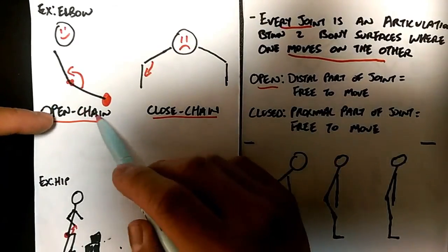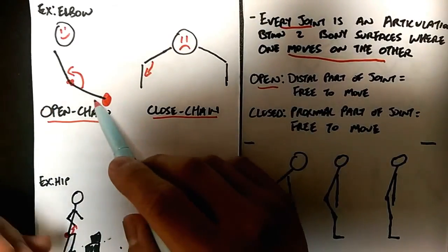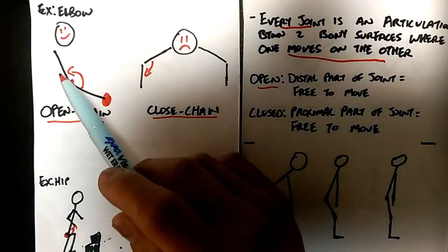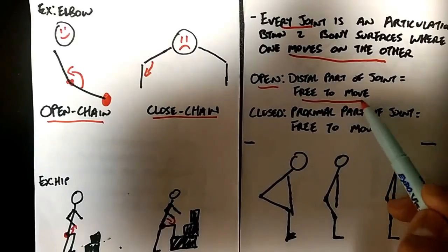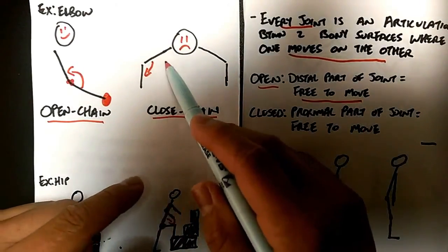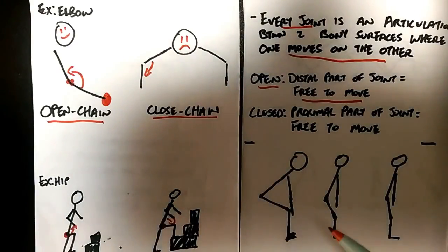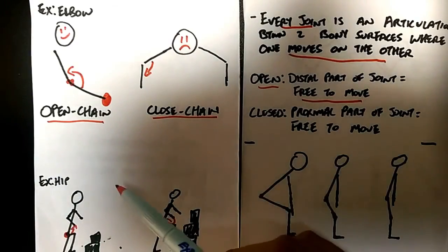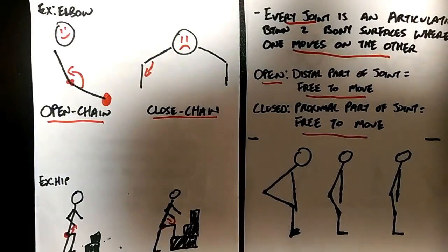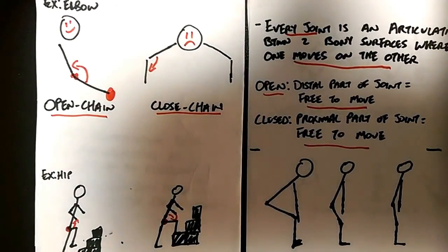So in the open chain case, the distal part of the joint, meaning the part that's furthest away, was moving towards the proximal part. It was free to move. However, in the closed chain movement, the proximal joint, the proximal part of the joint, was moving towards the distal part that was free to move. Make sense?